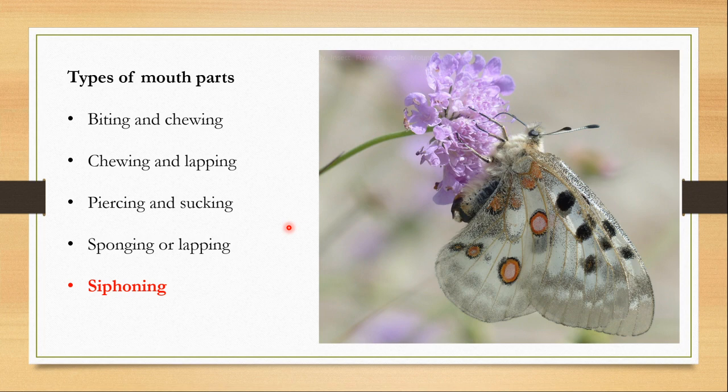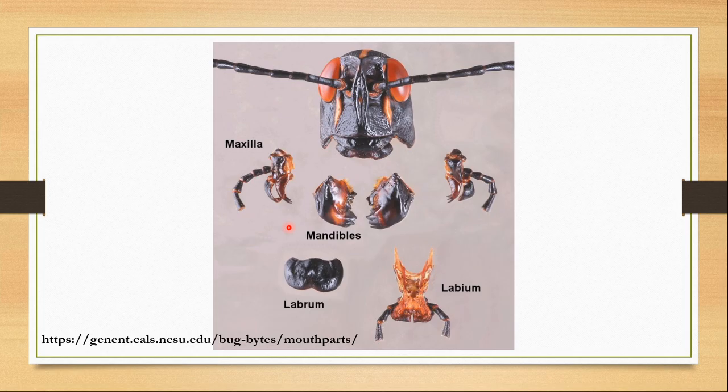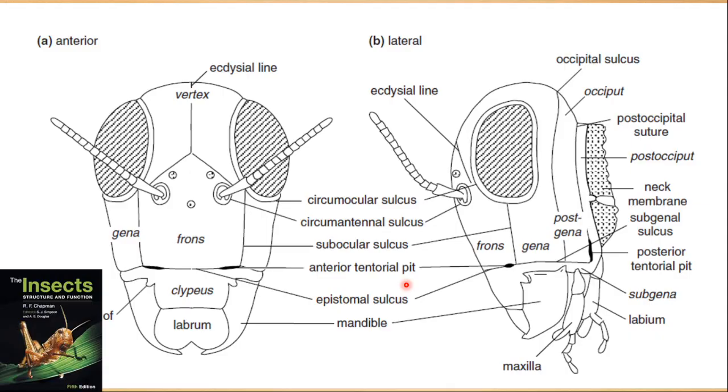Let's start with the simplest type, the biting and chewing mouthparts, which are found in grasshoppers. Mouthparts are basically appendages of the head. If I take them out from the head, I will find a labrum, two mandibles, two maxillae, and a labium. They are arranged in this order: first comes the labrum, then the mandible, then the maxilla, then the labium.